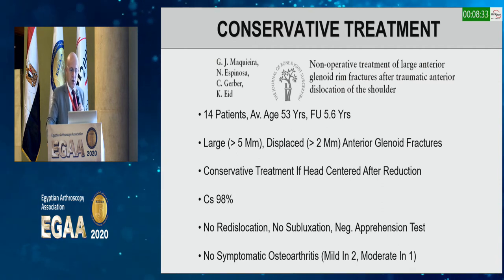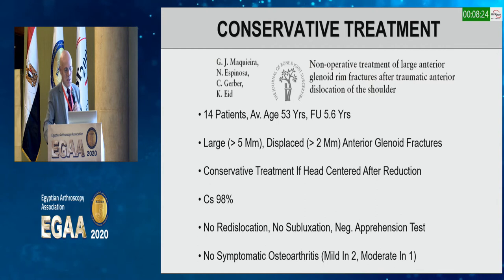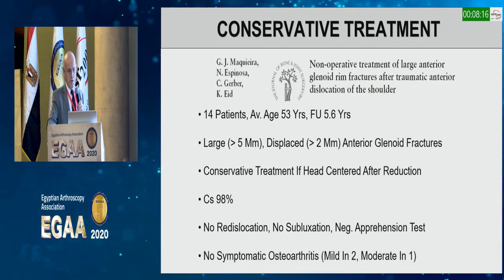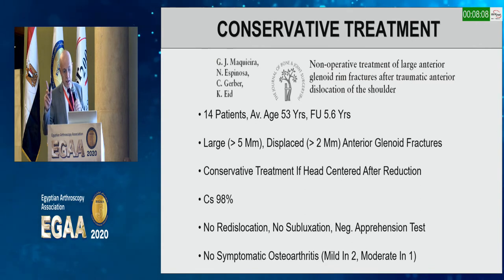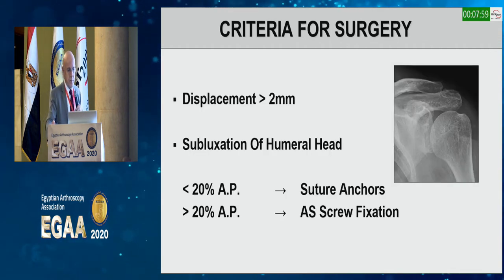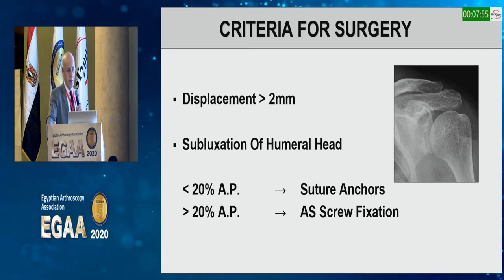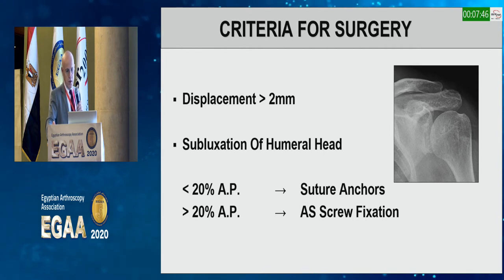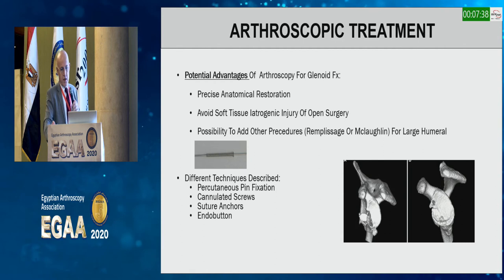Conservative treatment for glenoid fractures should not be forgotten. A series of 14 cases with up to five millimeter displaced anterior glenoid fractures showed a Constant score of 98 at follow-up, with no dislocation, no subluxation, no apprehension, and no symptomatic osteoarthritis — though osteoarthritis likely developed but was not very symptomatic. Criteria for arthroscopic surgery: displacement above two millimeters with subluxation of the humeral head, and bone loss less than 20 percent for suture anchor fixation; more than 20 percent may require screw fixation.